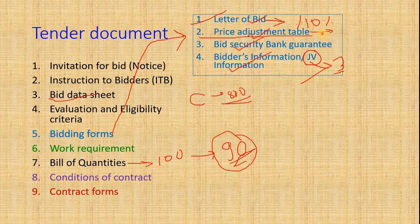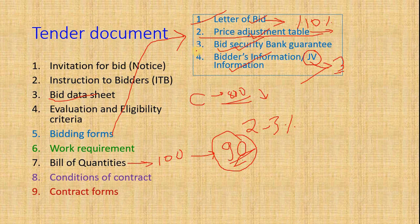The Bid Security Guarantee is a bank guarantee submitted while submitting the bid. It is generally two to three percent of the estimated amount. Bidders need to submit it either as a bank guarantee or in cash. If submitting in cash, they deposit in the account of the office. If submitting as a bank guarantee, the bank prepares a guarantee which is then submitted to the public entity.